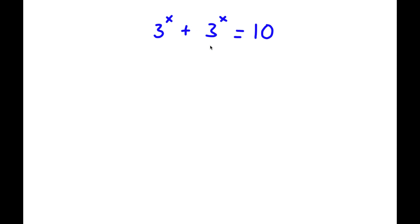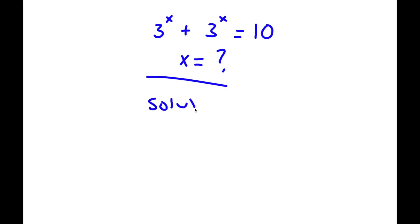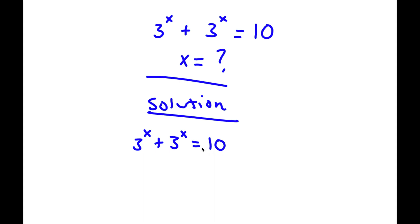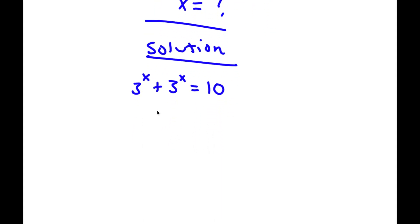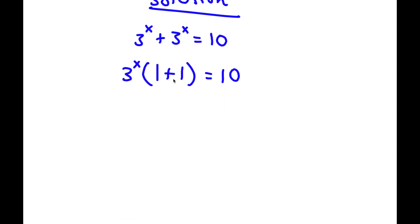Alright, so I have 3 to the power of x plus 3 to the power of x is equal to 10, and I want to find the value of x. First, I'm going to factor out 3 to the power of x from the left-hand side because both terms are 3 to the power of x. So I have 3^x times the quantity: each term divided by 3^x is 1, so I have 1 plus 1, which equals 10. Now 1 plus 1 is 2, so I have 3^x times 2 is equal to 10.